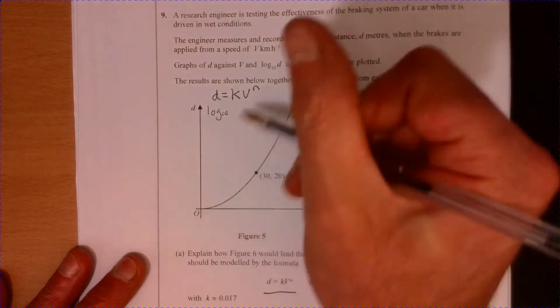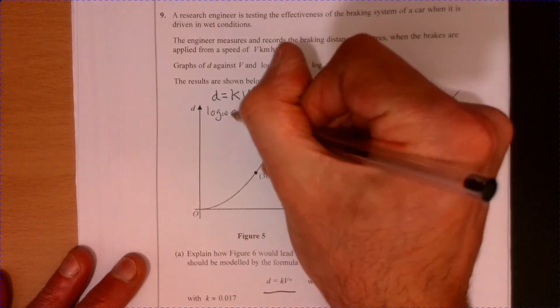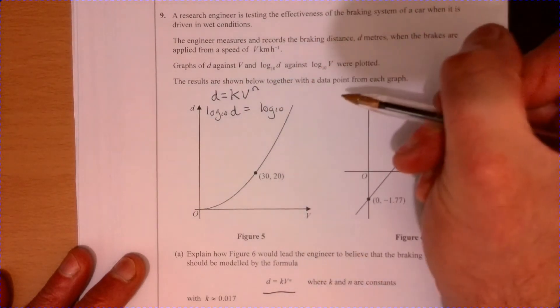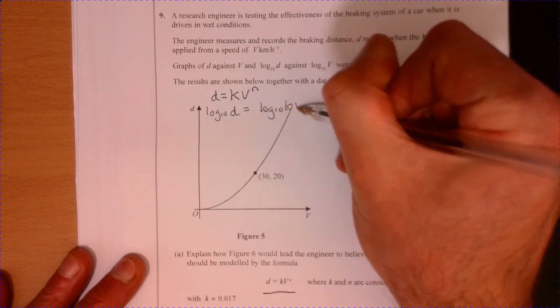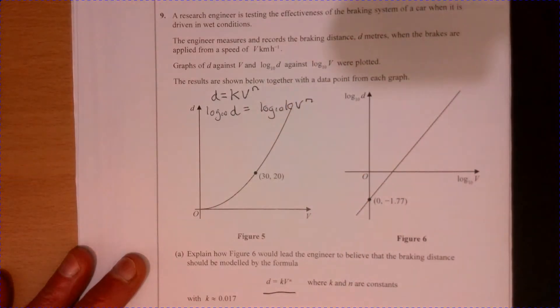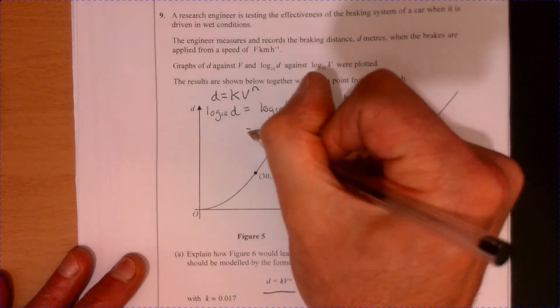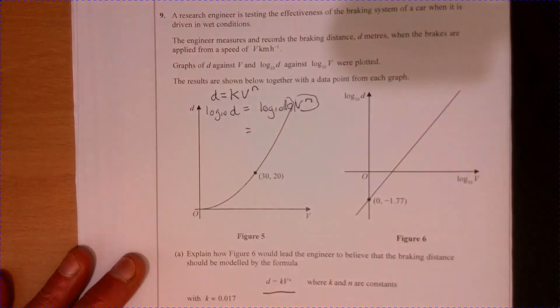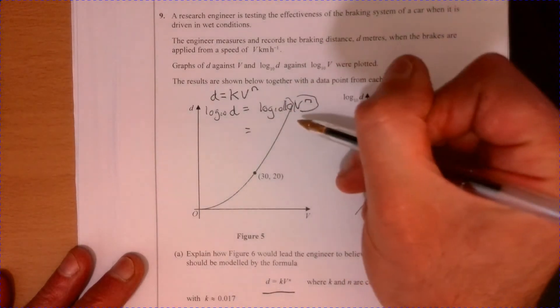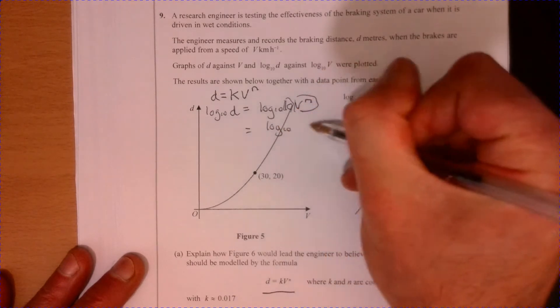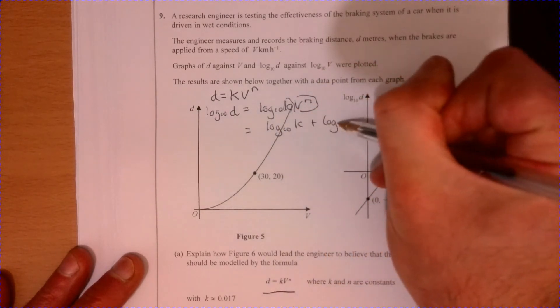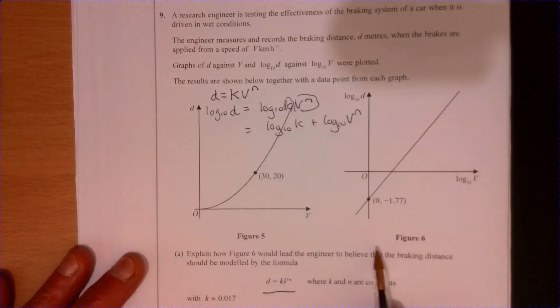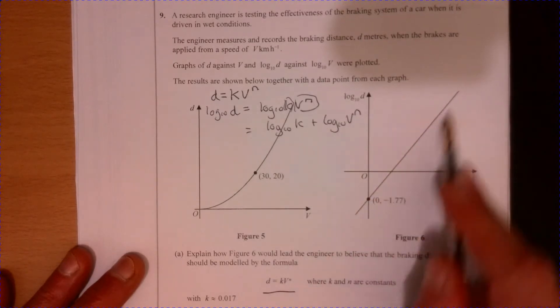So that'll give me log of d, and then this one over here is going to give me k and v to the n. Now thinking about your basic laws of logs, I can split this up. I've got two things here multiplied together, so I can split that up. I can write log base 10 k plus log base 10 v to the m.